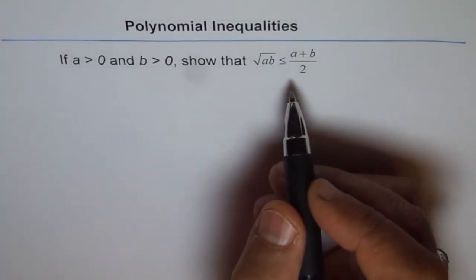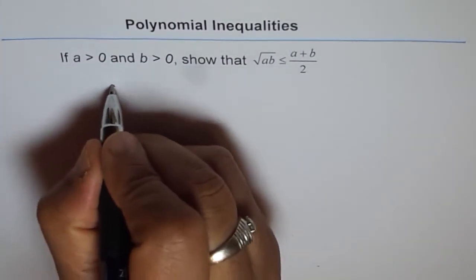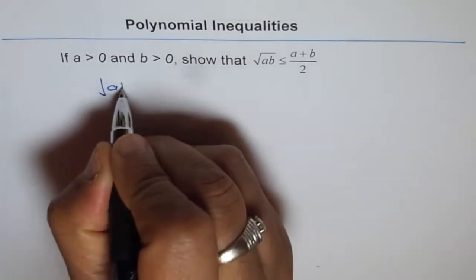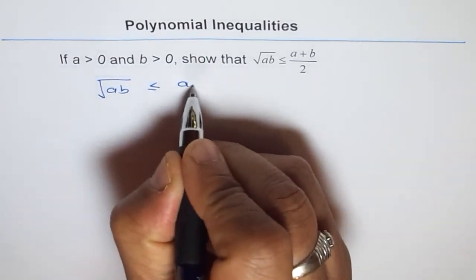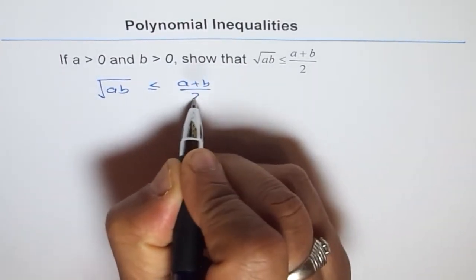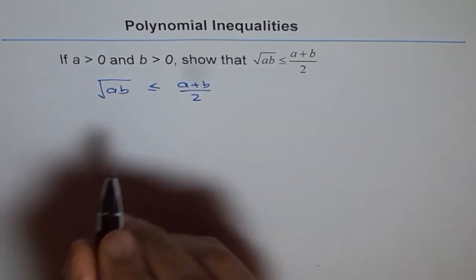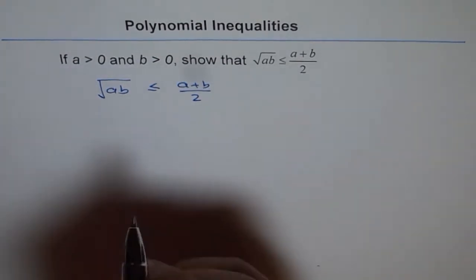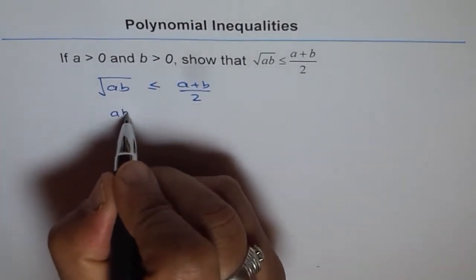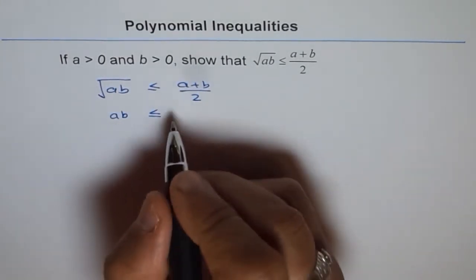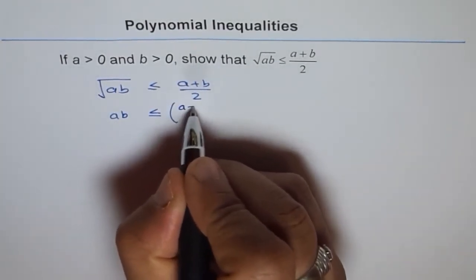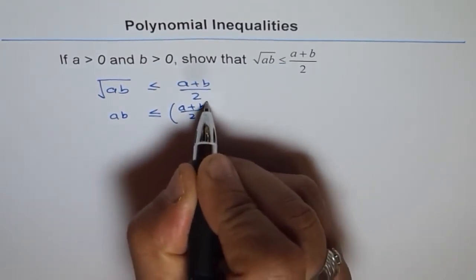Now, what we can do is start our problem like square root of AB is less than or equal to A plus B over 2. So what we can do is square both sides. If we square both sides, we get AB is less than or equal to A plus B over 2 whole square.